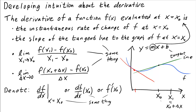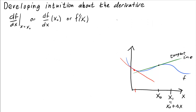The derivative at a single point, no matter how we denote it, is just a single number. It's the slope of the tangent line or the instantaneous rate of change. But this single number depends on the value x0.